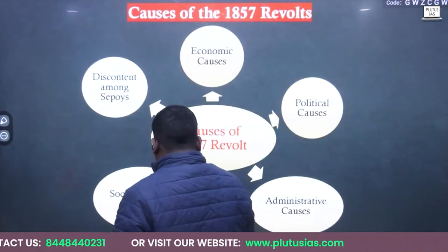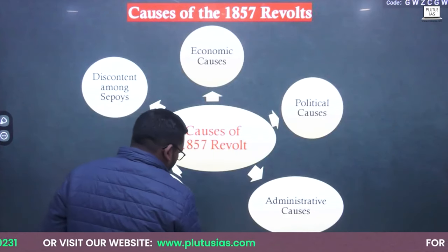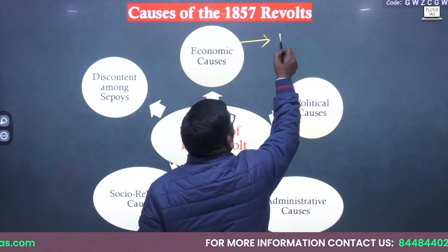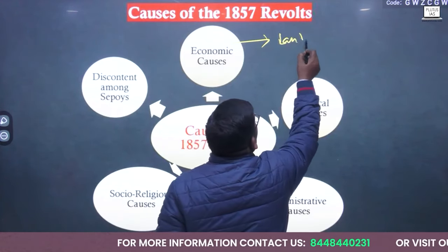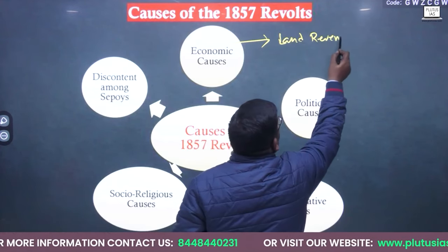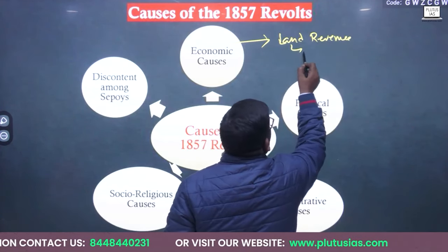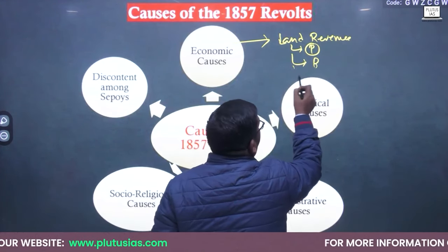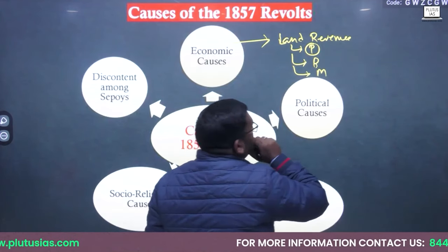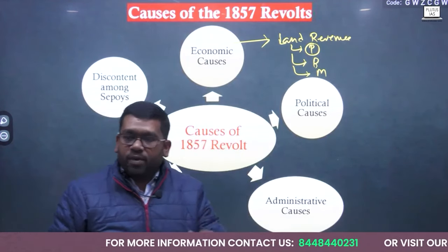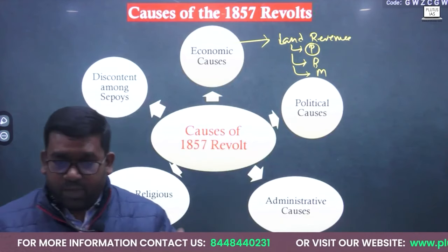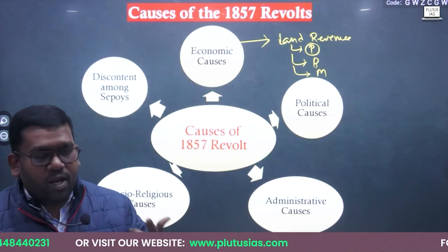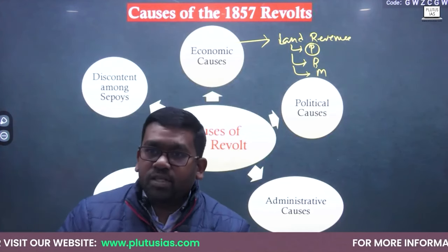In case of economics, what we have seen last time, there were economic policies. There are three to four types of economic policies. One is land revenue. In case of land revenue, we have seen there was a permanent settlement, then we had Raiyatwari, then we had Mahalwari. These all three were exploitative in nature, as seen in the previous chapters. That is why the people were not happy. Peasants were not happy. Zamindars were not happy because they were getting only 10% of the total share.